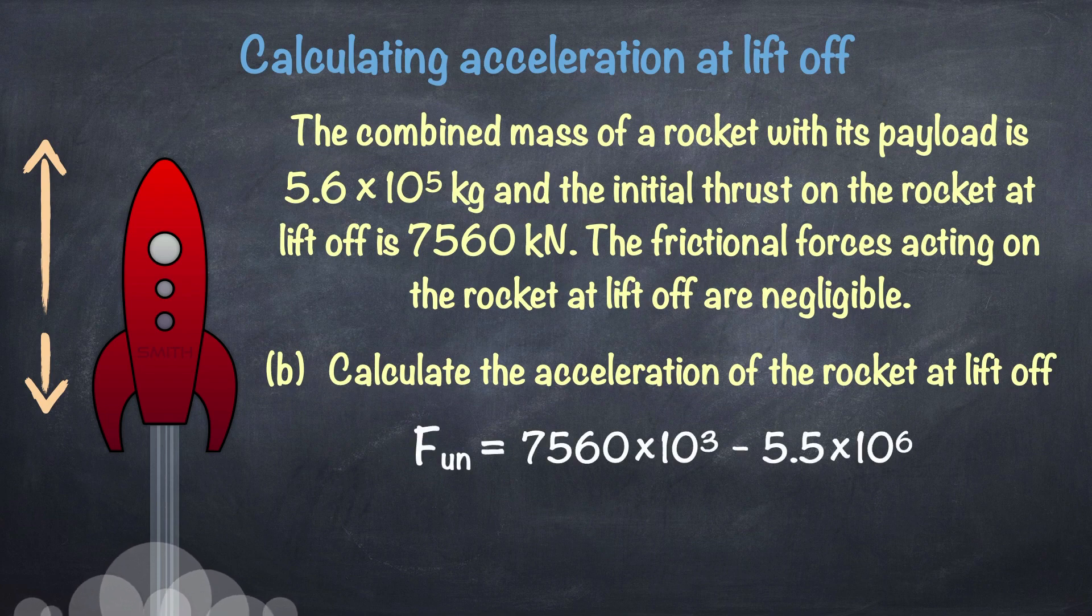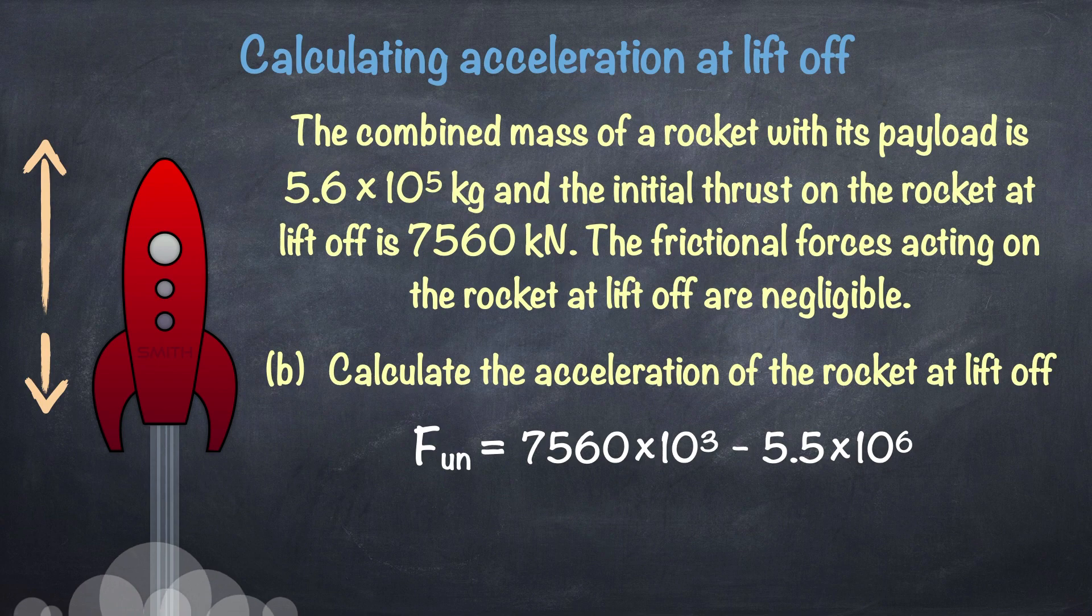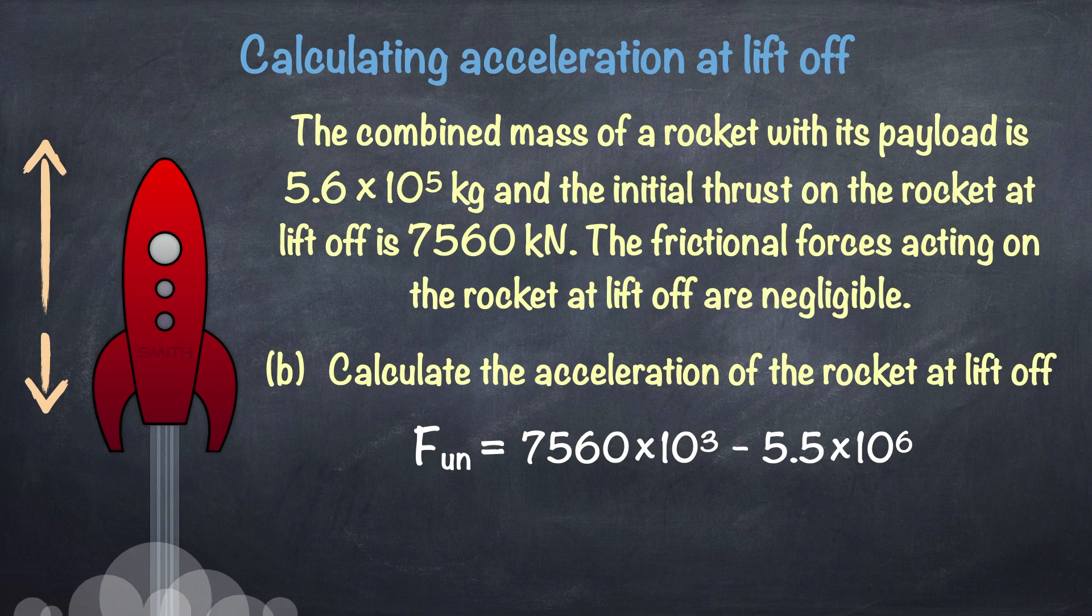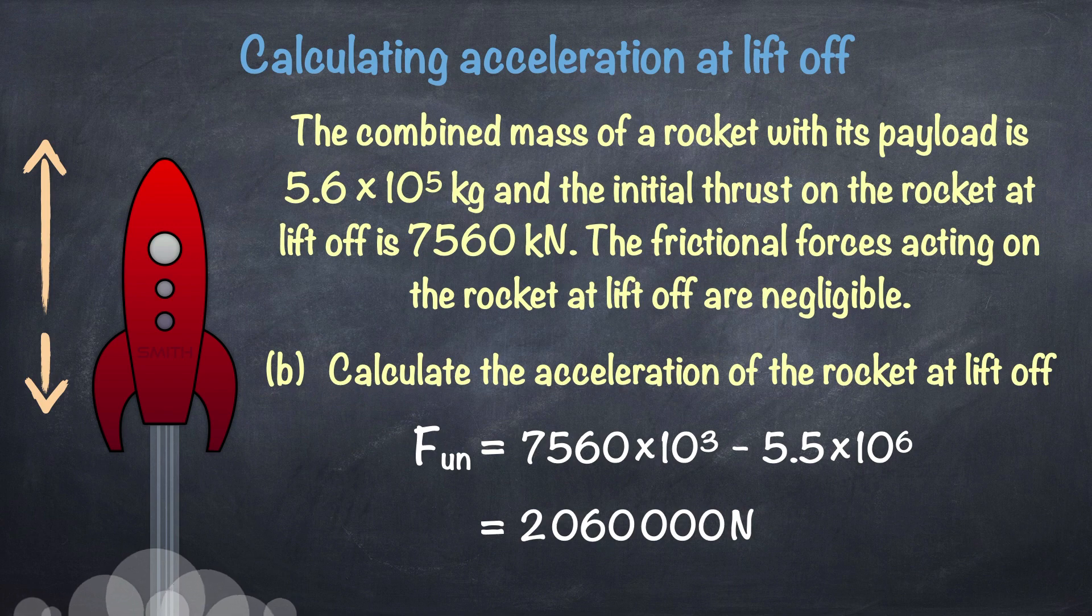minus 5.5 times 10 to the power of 6 newtons, the weight force. I've subtracted the forces because they're acting in opposite directions. That gives an unbalanced force of 2,060,000 newtons upwards. Let's move that number upwards to give us more room for the next part of the answer.